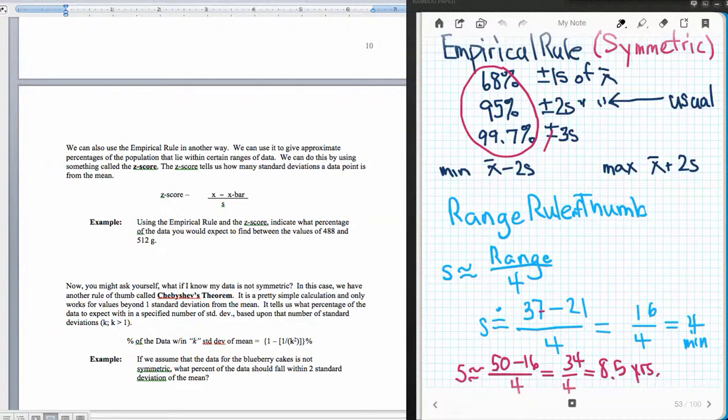I'm looking at the empirical rule again that we just finished up on the last video. So remember the empirical rule is for symmetric data, and it tells us the expected percentage of data within one or two or three standard deviations of the mean.